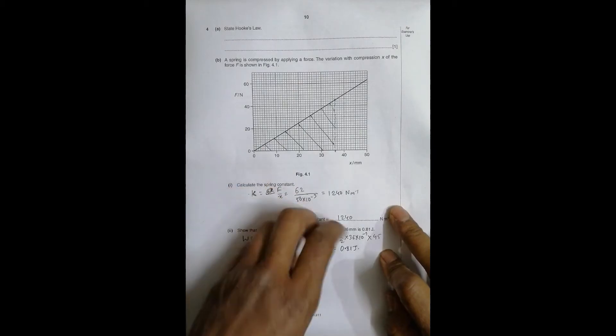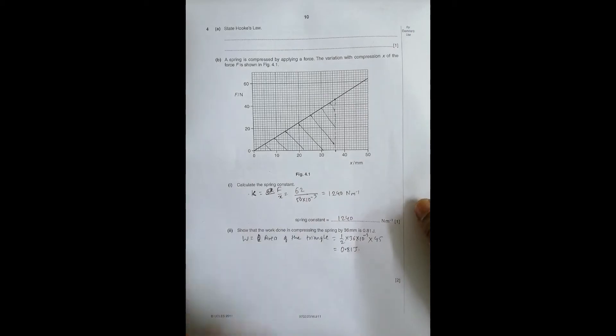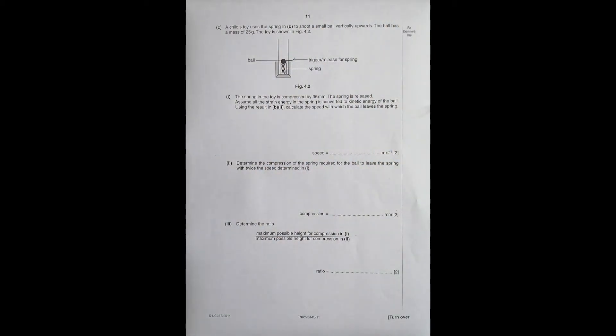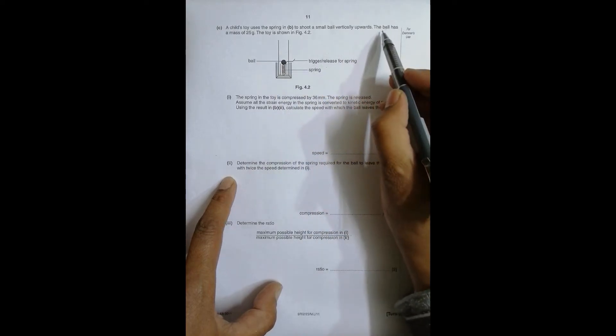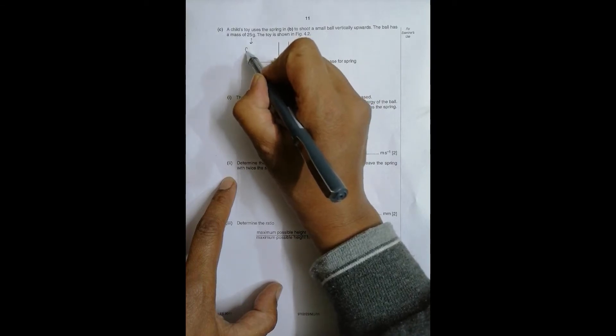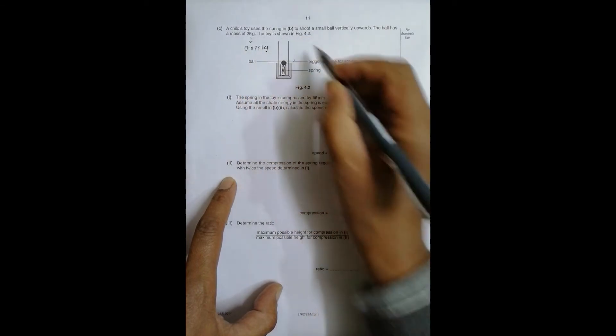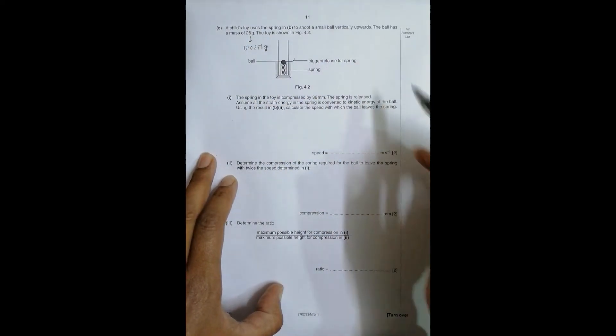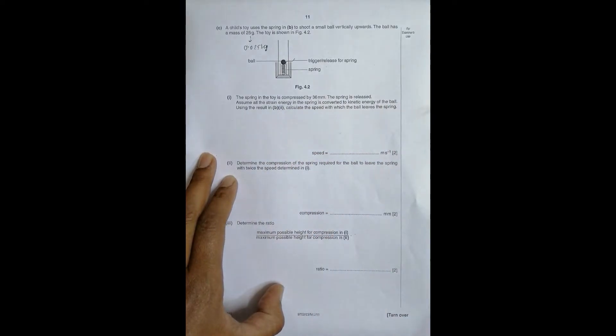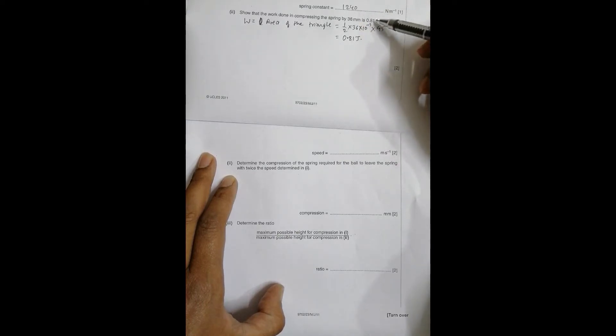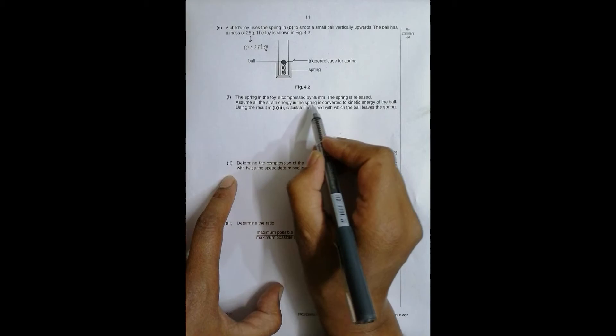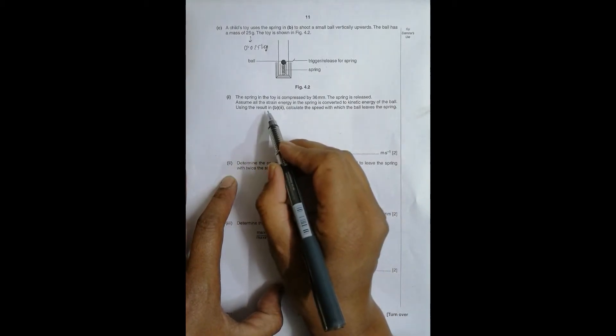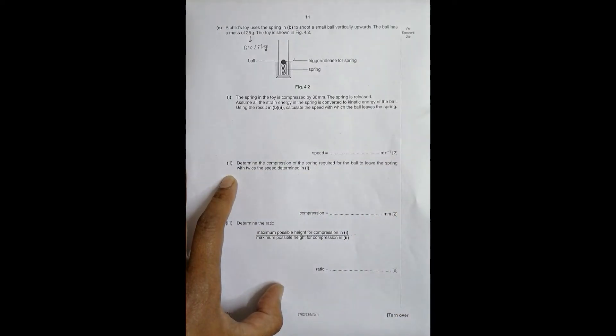Now in the next question, a child uses this spring to shoot a small ball vertically upward. The ball has a mass of 25 grams, so it's equal to 0.025 kg. The toy is shown in figure 4.2. The spring in the toy is compressed by 36 millimeter, which means energy is this much. The spring is released. Assume all the strain energy in the spring is converted to KE, no loss of the ball. Using the result in b2, find the speed with which the ball leaves the spring.